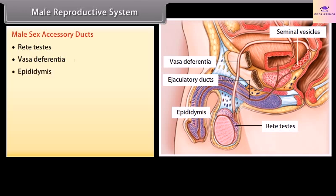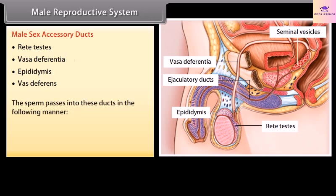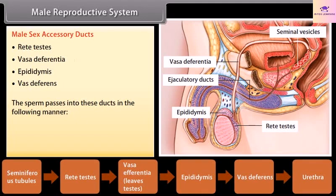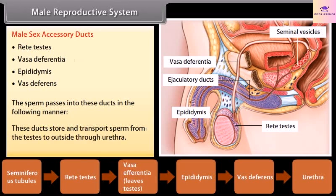The male sex accessory ducts include the epididymis, vasa deferens, and related structures. The sperm passes through these ducts in the following sequence: seminiferous tubules → rete testes → vasa efferentia (leaving the testes) → epididymis → vas deferens → urethra. These ducts store and transport sperm from the testes to the outside through the urethra.